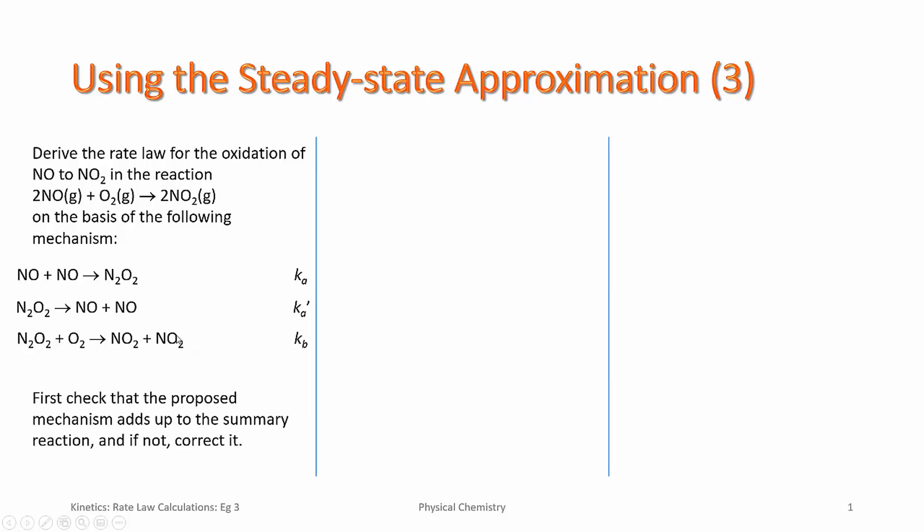We begin by first checking that the proposed mechanism, in fact, adds to the summary reaction. We write the first two steps as an equilibrium and then add in the third. We find we get some cancellation and, in fact, the overall reaction is the same. So we're good to go.